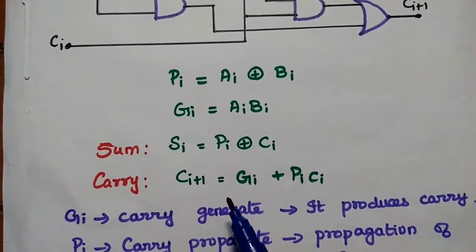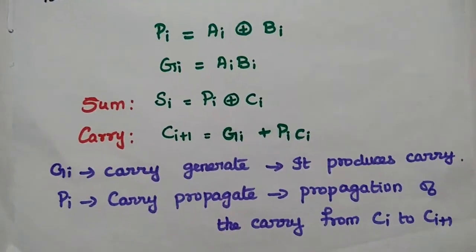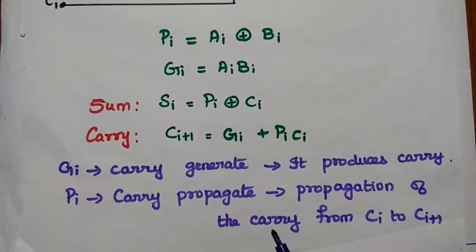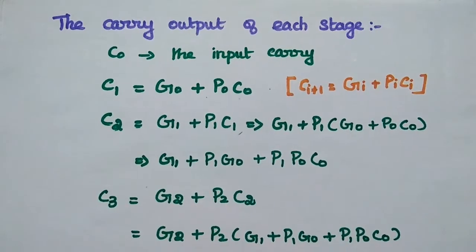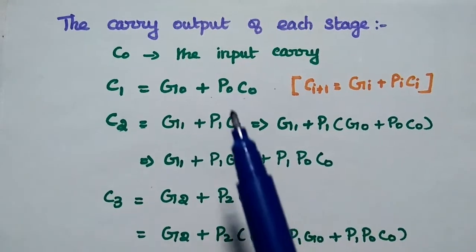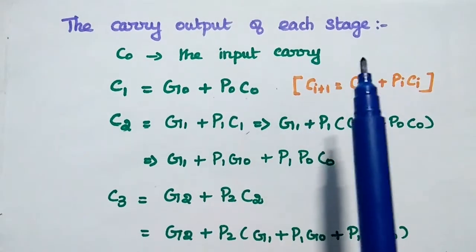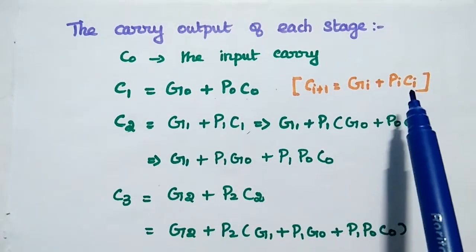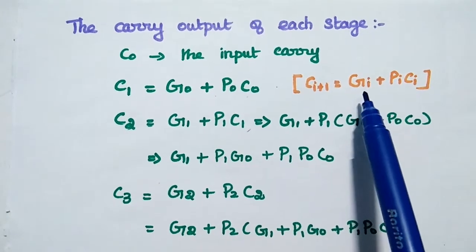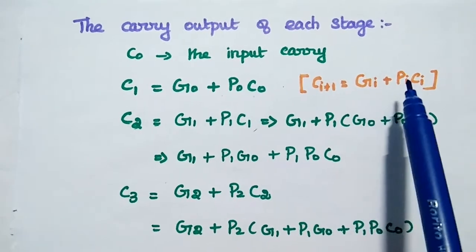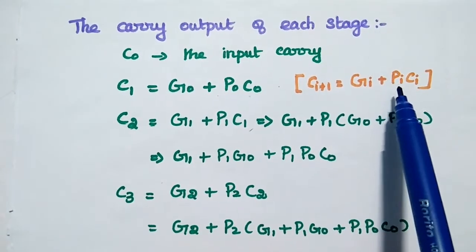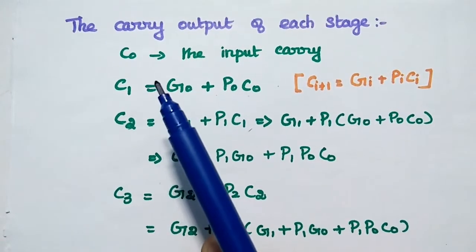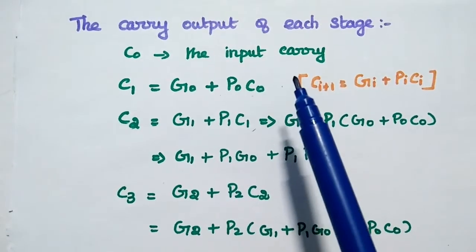Similarly, the carry output is given by: C(i+1) = Gi + Pi · Ci. Here Gi is the carry generate, meaning it produces the carry, and Pi represents carry propagate, which is the propagation of the carry from Ci to C(i+1). The carry output of each stage can be obtained using the formula C(i+1) = Gi + Pi · Ci. Here Gi represents carry generation equal to the AND of two inputs, and Pi represents carry propagation equal to the XOR of two inputs. C0 represents the first input carry to the first full adder circuit.